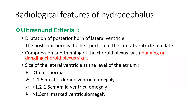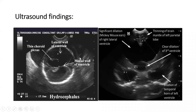On ultrasound, there is dilatation of the posterior horn of the lateral ventricle — the posterior horn is the first portion of the lateral ventricle to dilate — and compression and thinning of the choroid plexus, called the hanging or dangling choroid plexus sign. Size of the lateral ventricle less than 1 cm is normal, 1 to 1.5 cm is borderline ventriculomegaly, more than 1.2 to 1.5 cm is mild ventriculomegaly, and more than 1.5 cm is marked ventriculomegaly. This measurement is taken from the medial wall to the lateral wall, with a thin choroid plexus.